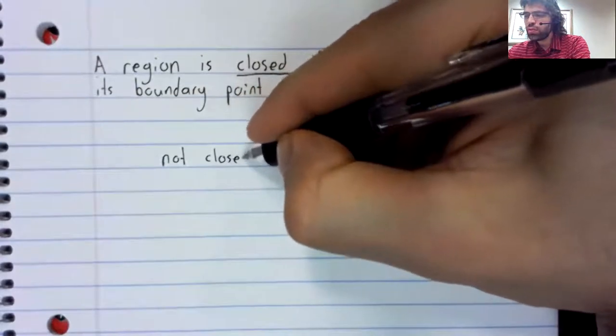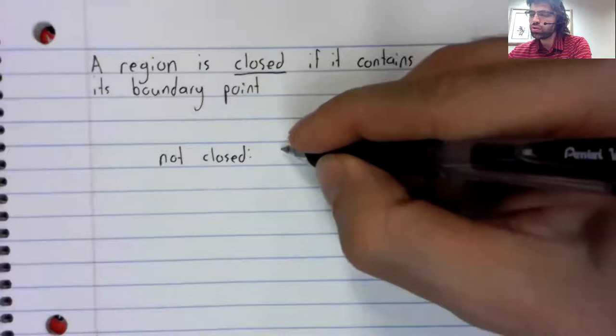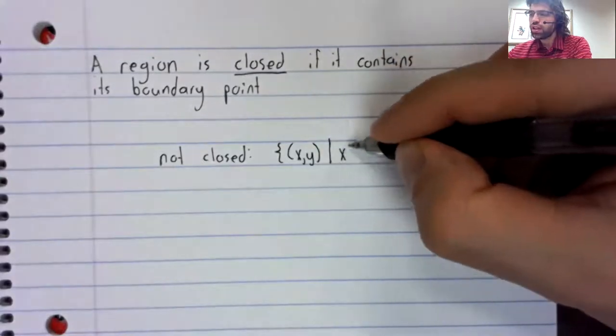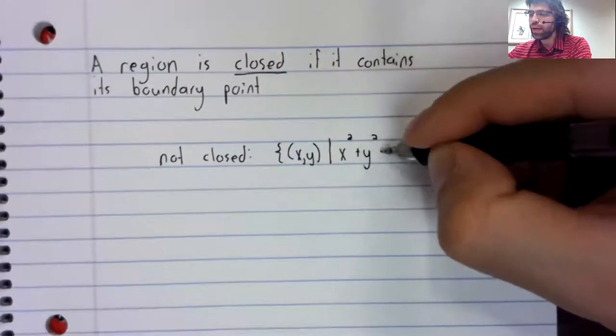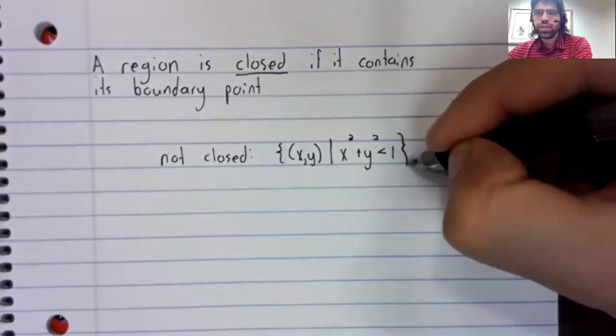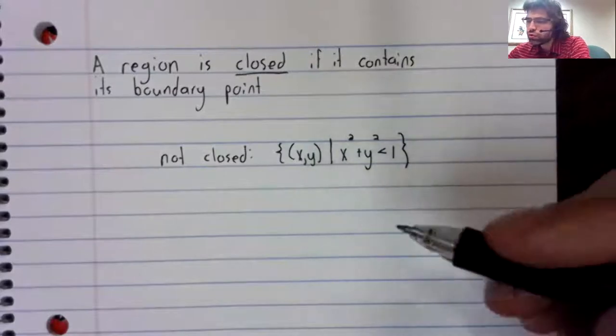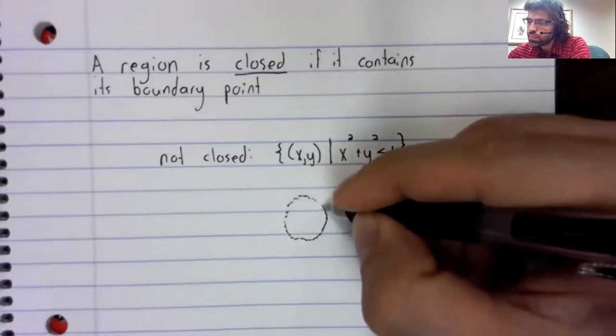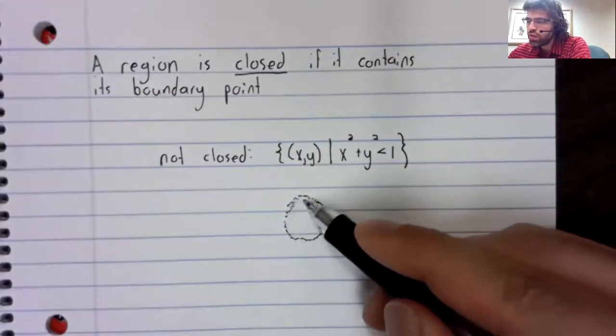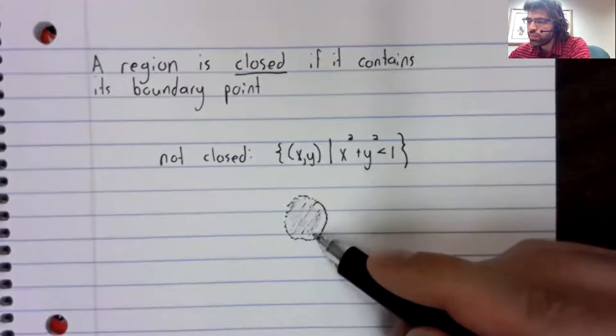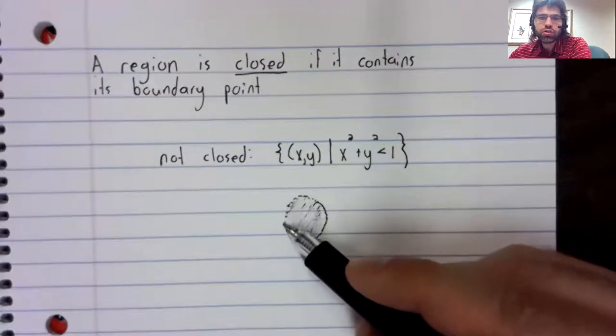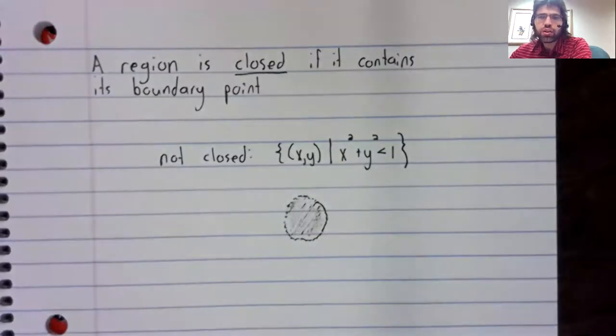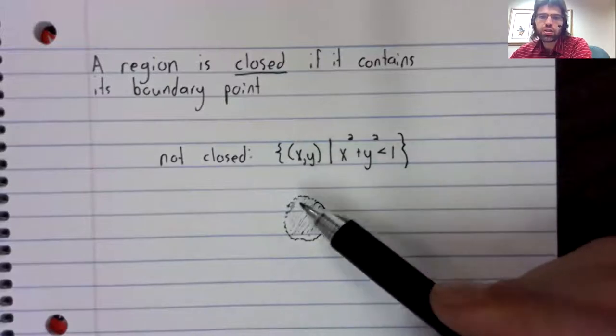So for an example of a region that isn't closed, we could look at all the points x comma y, such that x squared plus y squared is less than one. This region is a circle, the unit circle, and it's all of the points in here. But the points on the circle itself, the boundary of the region, are not included. So this is not closed.